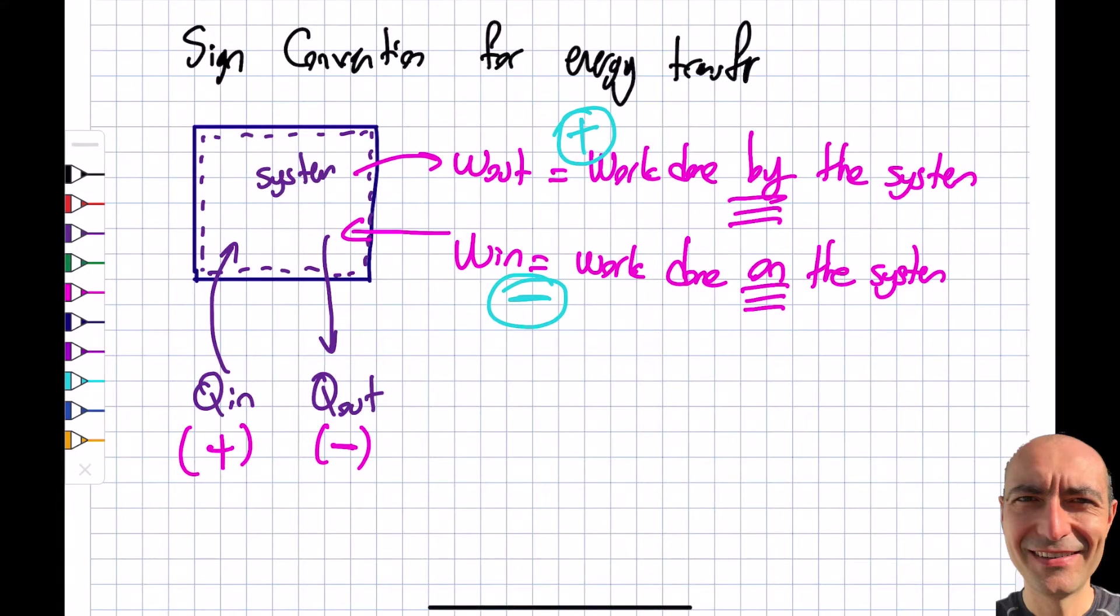We will cover this when I cover the first law, but there will be a negative sign in front of W. Delta E will be Q minus W. Do you see? I have a negative, so with a positive W, it will be okay—the energy of the system will reduce. The next question may be, well, this is silly. Why don't you simply be consistent? Call work out negative and work in positive. Yeah, from that point of view, you're absolutely right.